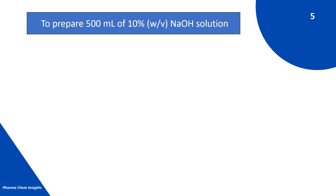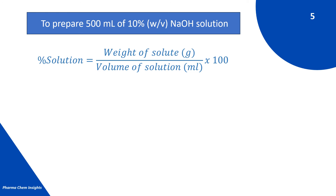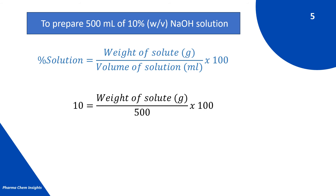To prepare 500 ml of 10% weight by volume NaOH solution — in this example we have changed the volume to 500 ml. Using the formula, percent solution equals weight of solute in grams divided by volume of solution in ml, multiplied by 100. Note that the volume of solution can be adjusted as per your requirement. Putting the values in the formula: 10 equals weight of solute in grams divided by 500 ml, multiplied by 100.